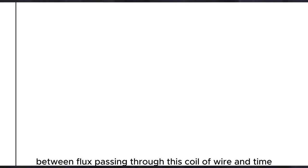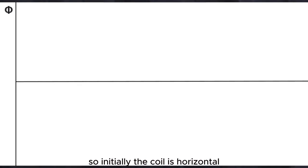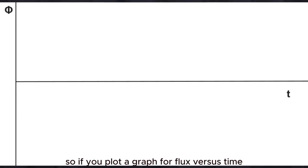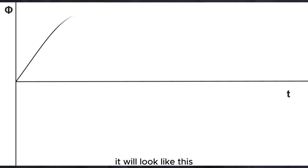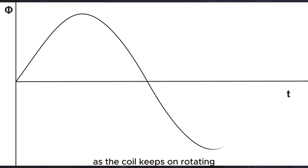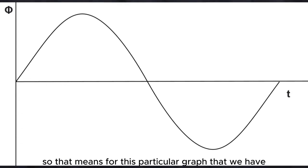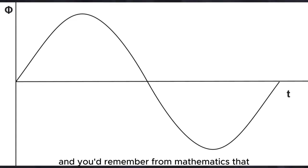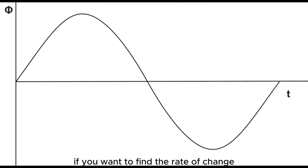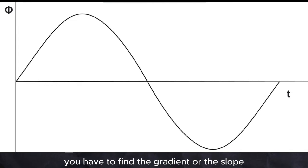So we can draw a graph of the flux passing through this coil of wire versus time. Initially the coil is horizontal, so the flux is zero. But then the coil is rotated and the flux starts to increase. As the coil keeps on rotating, the flux keeps on changing, and what we get is a sine wave. Now remember, the induced EMF is proportional to the rate of change of flux and not the flux itself. So for this graph, we need to find the rate at which the flux is changing.